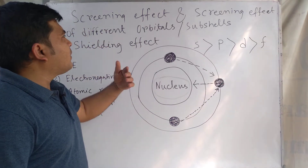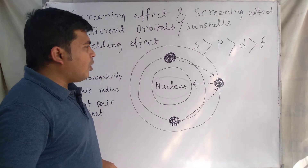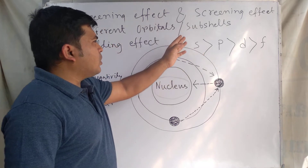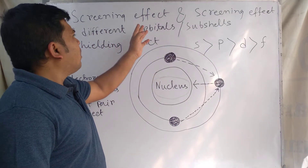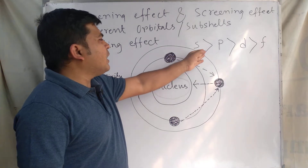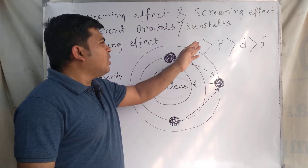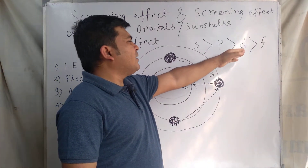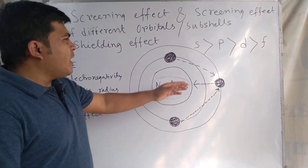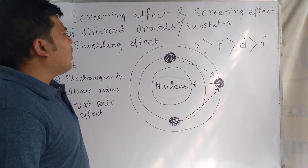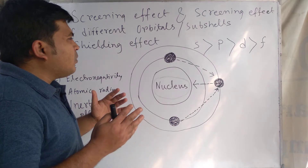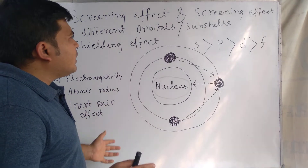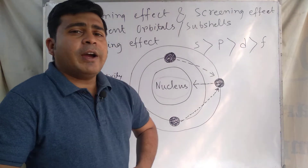This is called the screening effect or shielding effect of sub-shells or orbitals. If we talk about the order of screening effect for orbitals or sub-shells, the order is: S electrons have more screening effect than P, then D, and then F. So the S orbital or S sub-shell operates the highest screening effect.